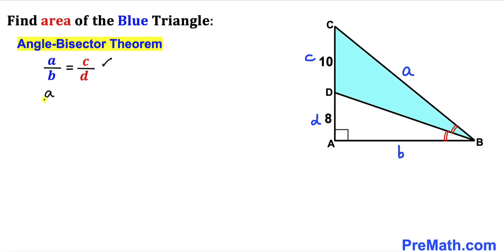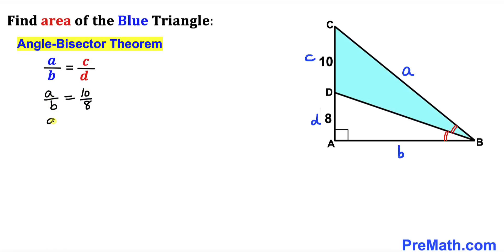Let's fill in the blanks in this formula. I'm going to write A divided by B equals C — in our case 10 — and D is 8, so 10 divided by 8. Let me tweak this equation and switch B and 10, so this equation can be written as A divided by 10 equals B divided by 8. It doesn't make any difference whatsoever.